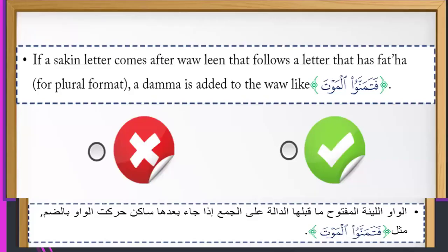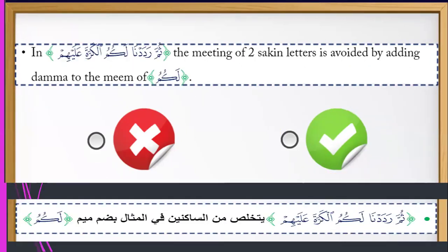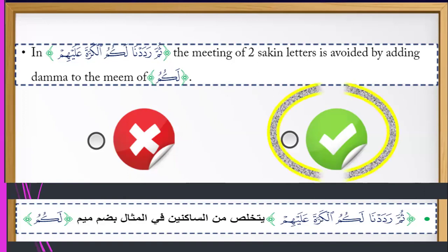First question: if the second letter comes of the word means 'thus,' follow the letter that has fatha for plural format. A dhamma is added to the word like 'fatha manna wul mawta.' True or false? Yes, it's true. The meeting of two sukun letters is avoided by adding dhamma to the meem of 'laqumu.' True or false? Yes, it's true.